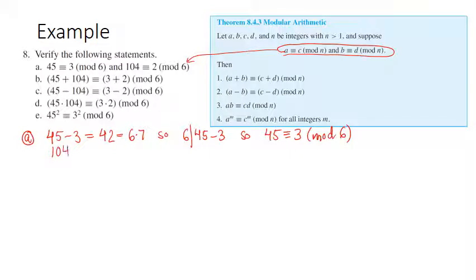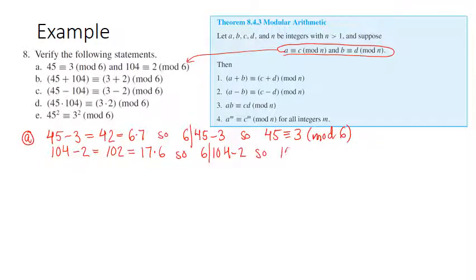Likewise for 104: 104 minus 2 is 102, which is 17 times 6. So 6 divides 104 minus 2, meaning 104 is indeed congruent to 2 mod 6.